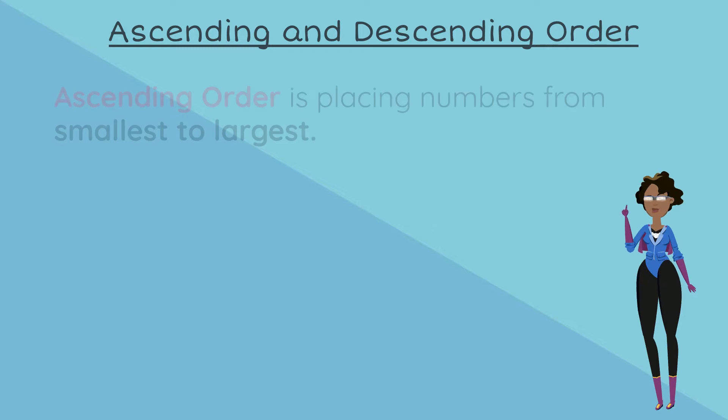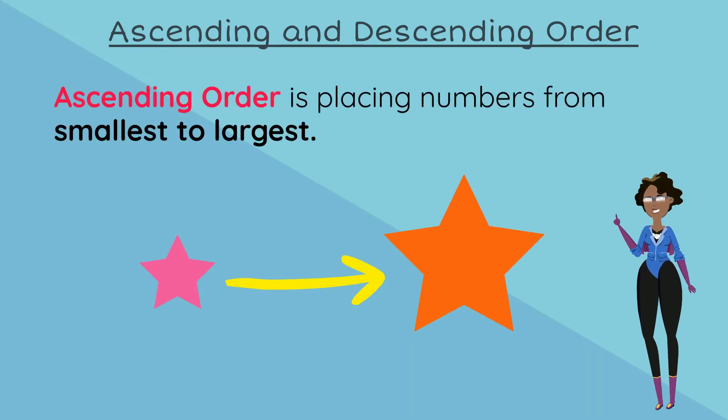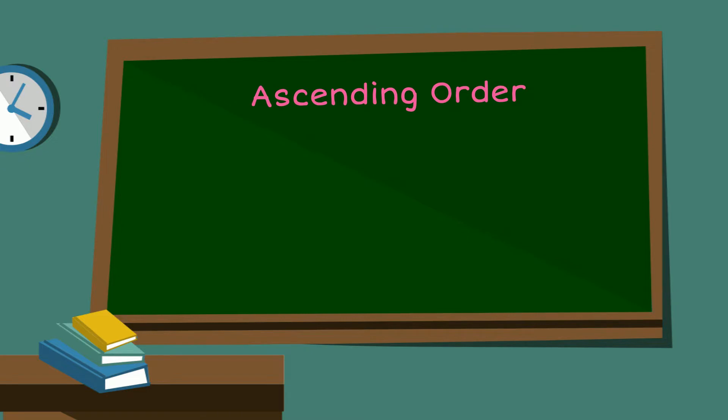Firstly, ascending order is placing numbers from smallest to largest. Look at the numbers shown. Let's put them in ascending order.